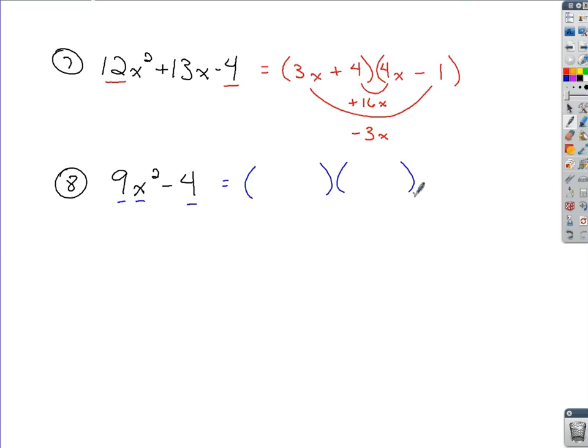Difference of two squares. Factors to two binomial expressions. Where? In the lead positions, we take the square root of the lead guy here. Square root of 9X squared would be 3X. In the last positions, we take the square root of this last guy being 4. Square root of that would be 2. And then the rule is just change your signs. Plus, minus, or minus, plus. That's your factored expression for a difference of two squares.